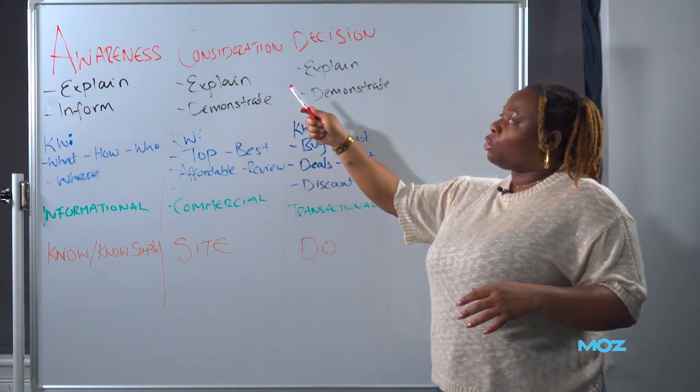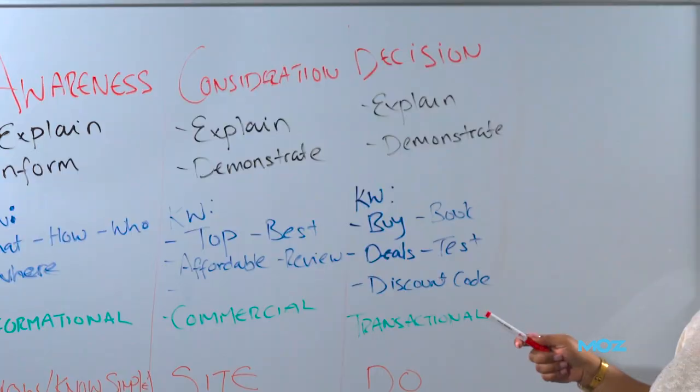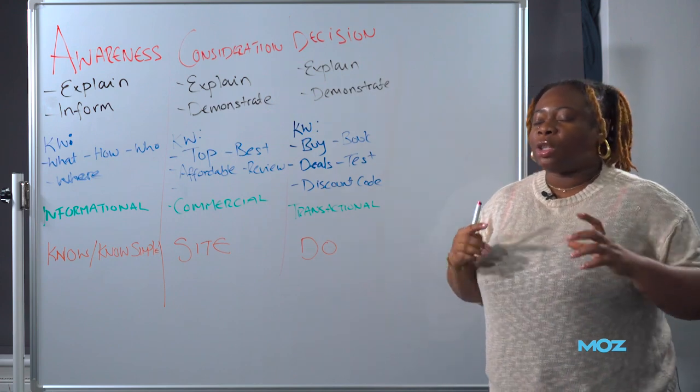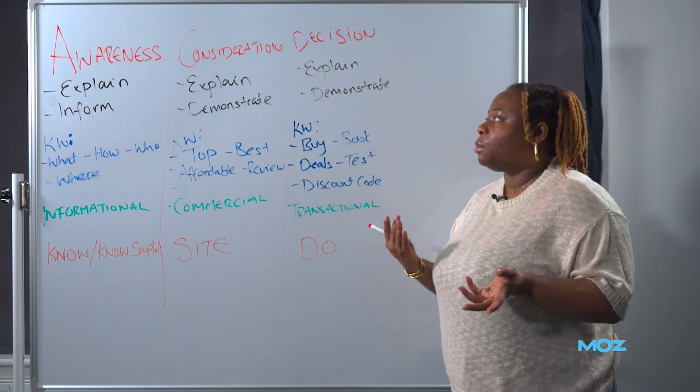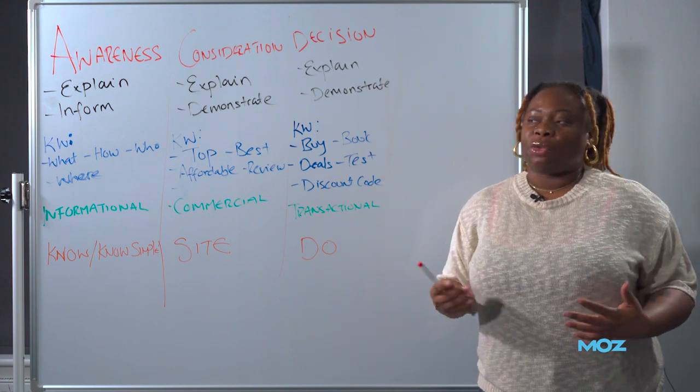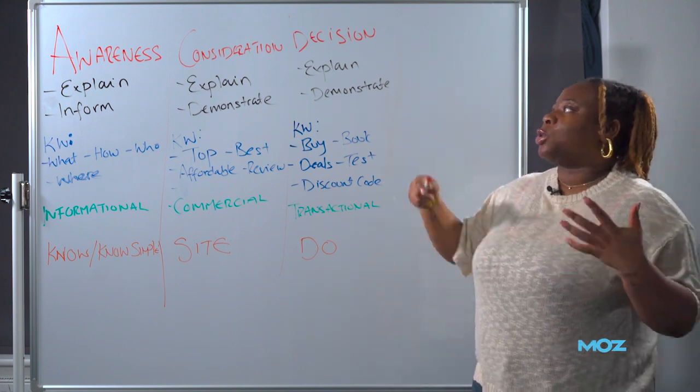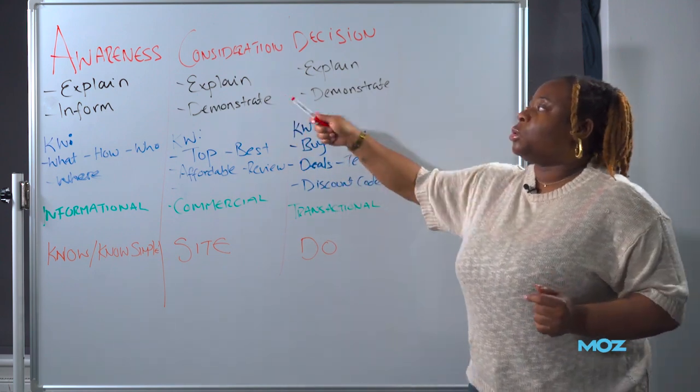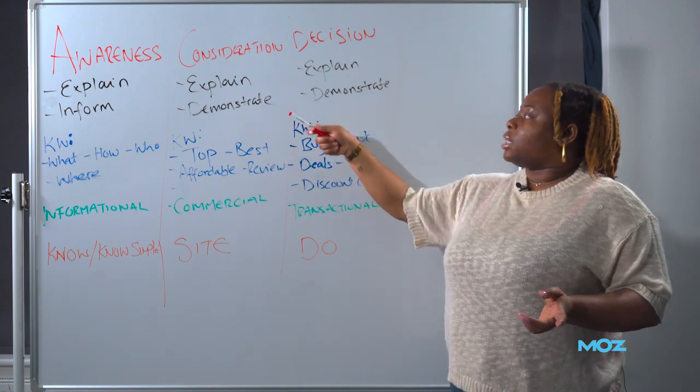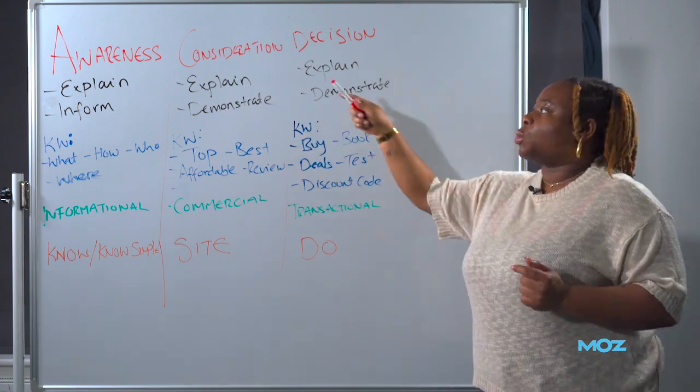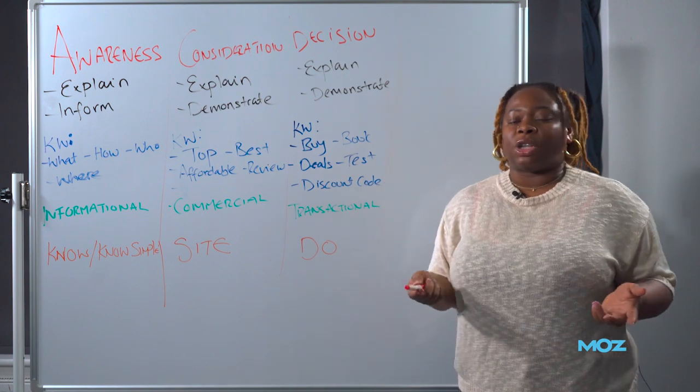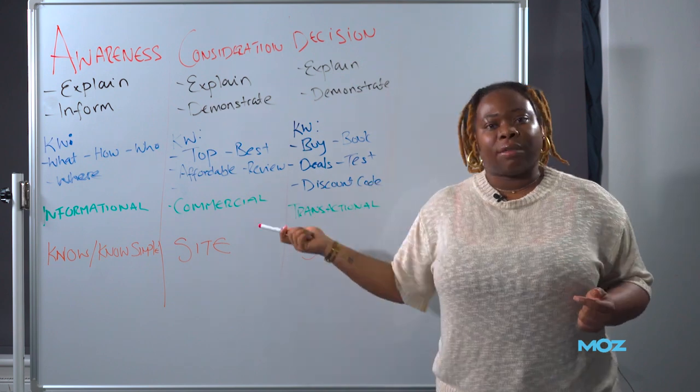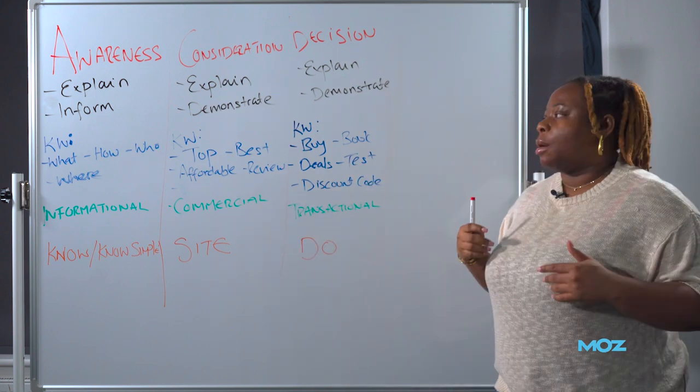But when our buyer moves across to consideration, now consideration is why they're in this stage is because they know their problem. They have a better understanding of what the problem could be, but they're just trying to find the best solution for it. So that's why it's called consideration. They're considering the options. And in this stage, you will still need to explain to them what the options are, and sometimes you might have to demonstrate because this is where your users are going to look for options. So here we can see content such as explainer videos or comparison guides as such.